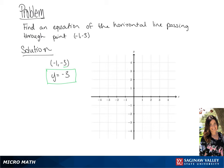Now to plot this, we're going to go down to negative 1, negative 3 and draw a horizontal line going through this point.